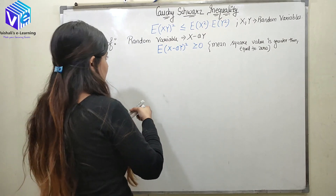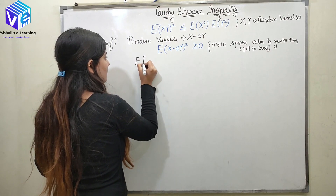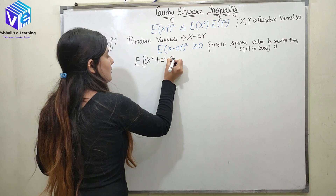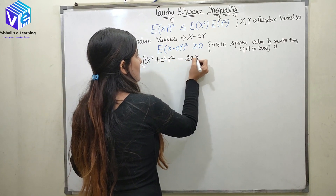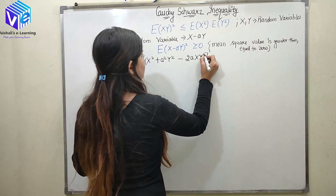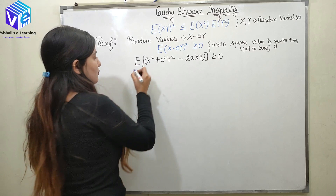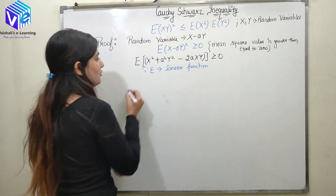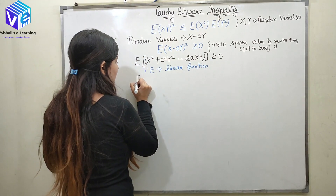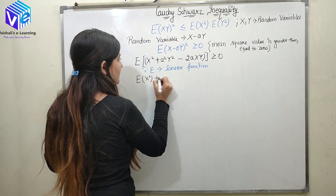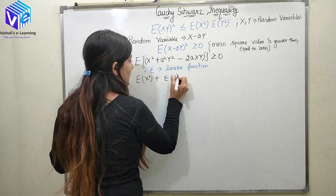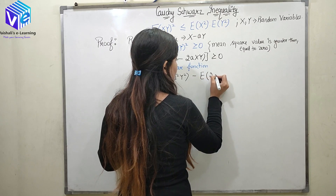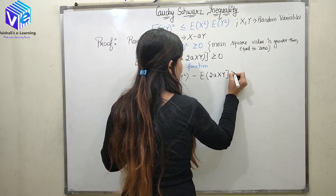If I expand E[(X - aY)²], it equals E[X² + a²Y² - 2aXY], which is greater than or equal to 0. Because expectation is a linear function, I can use that in the expansion: expectation of X² plus expectation of a²Y² minus expectation of 2aXY is greater than or equal to 0.